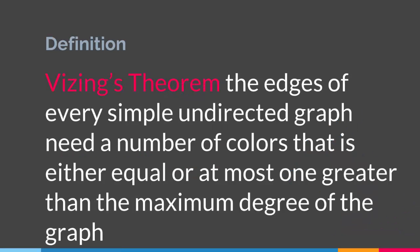So if you have a simple undirected graph — a graph that has no loops and no parallel edges — and you are trying to figure out how many colors you need to color the edges properly, based on Vizing's theorem you will either need a number of colors equal to the maximum degree of the graph, or one greater than that number. That is basically Vizing's theorem.